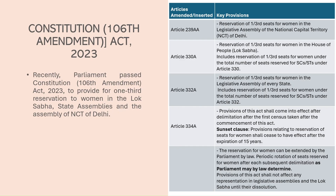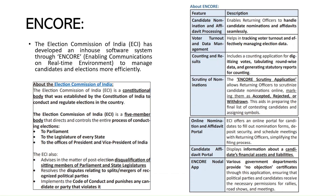Next is the 106th Constitutional Amendment Act, which now makes mandatory reservation for one-third seats for women in Lok Sabha, legislative assemblies of states, and the legislative assembly of Delhi. So the 106th Constitutional Amendment Act is related to women's reservation in the political sphere.